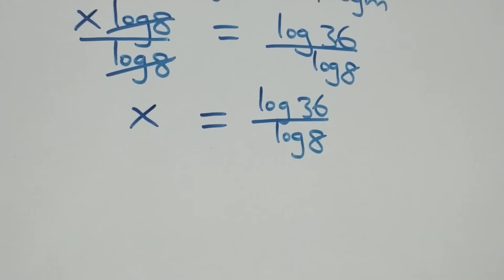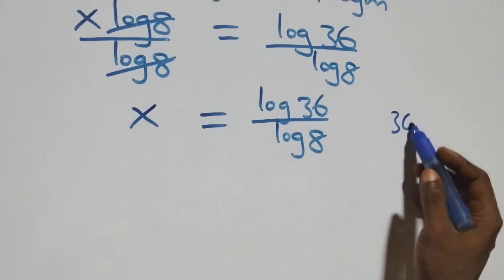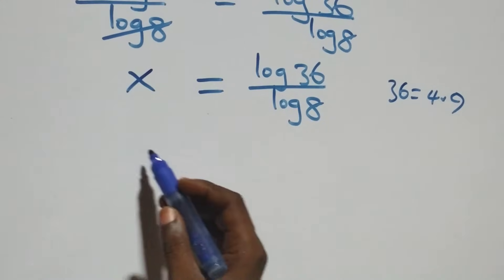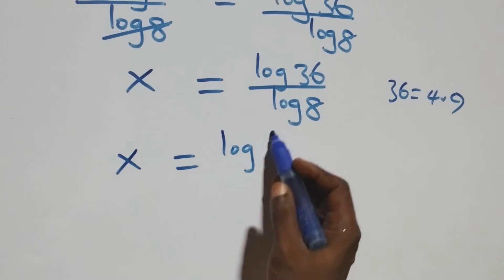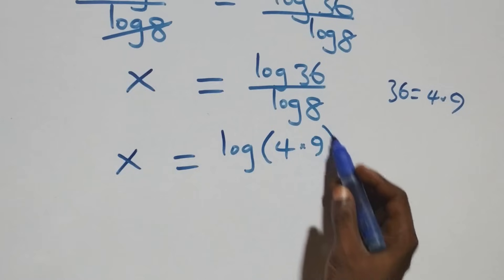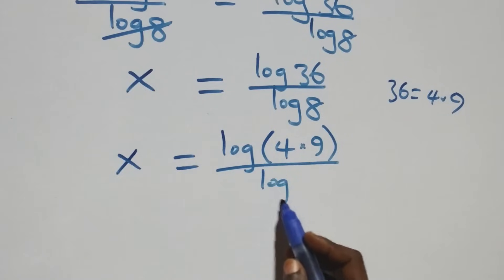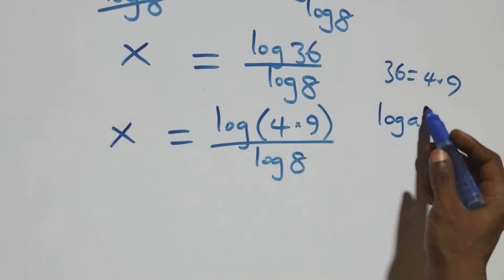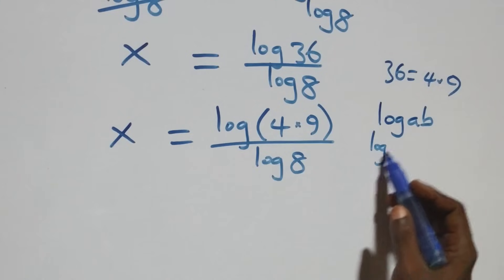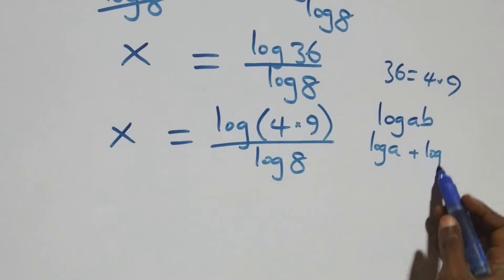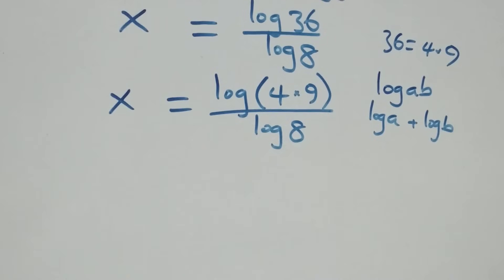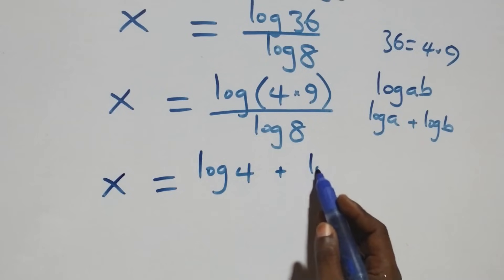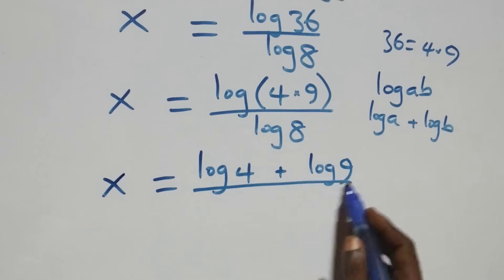Next, we can rewrite 36 as 4 times 9. So what we have becomes x equals to log(4 times 9) over log 8. Then we apply the product rule of logarithms: log(a times b) is the same as log a plus log b. So this becomes x equals to log 4 plus log 9 over log 8.